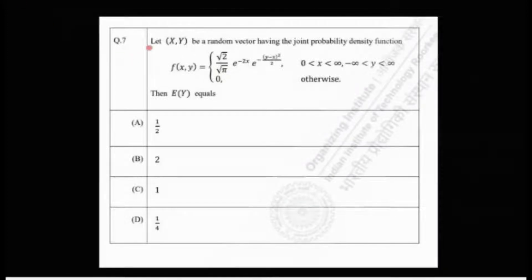The problem says that let (X,Y) be a random vector having the joint probability density function f(x,y) equals root 2 by root pi times e to the power minus 2x times e to the power minus (y minus x) squared divided by 2, when x is a positive real number and y is a real number, and 0 otherwise. Then expectation of Y equals the following options are given.